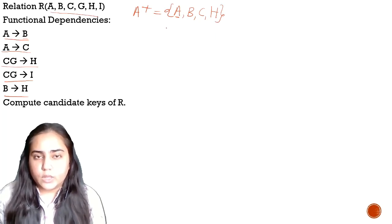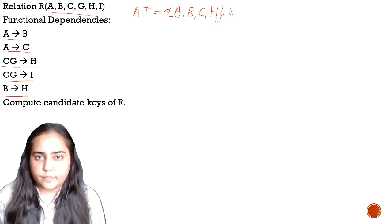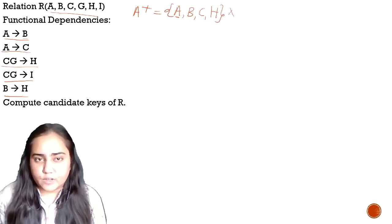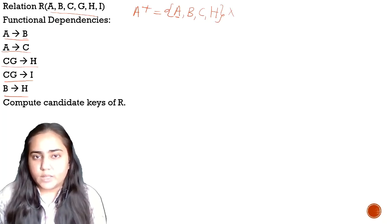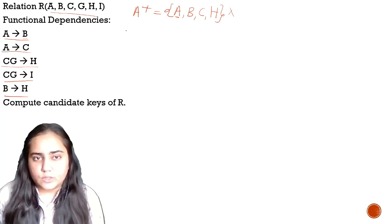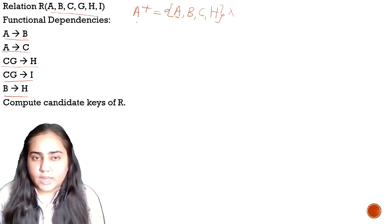You can see that we did not get all the attributes of R — G and I are missing. So we can say that A is not a candidate key. We can call some attribute or set of attributes a candidate key only when the closure can generate all the attributes, and we did not get that. So A is not a candidate key.